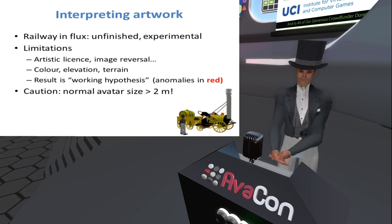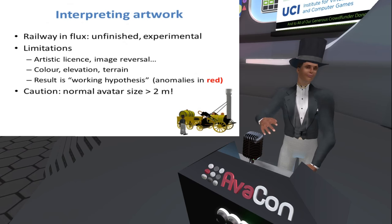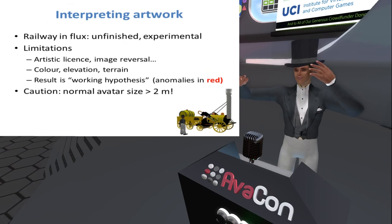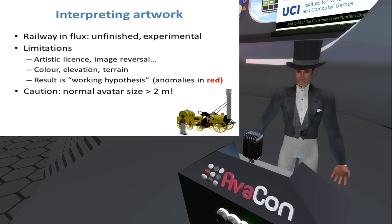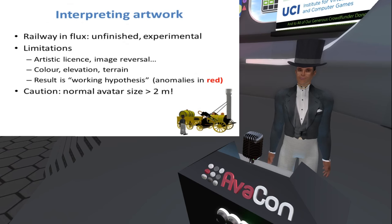We know nothing about the elevation of many of the buildings that we can see on maps, and we know very little detail about the terrain as it was then. All I can say is that what we have is a working hypothesis. When I show you some of what I've built, you'll occasionally see things highlighted in red — these are anomalies shown in some artwork but not in others.